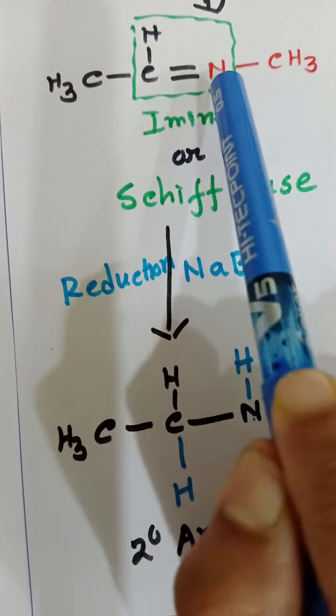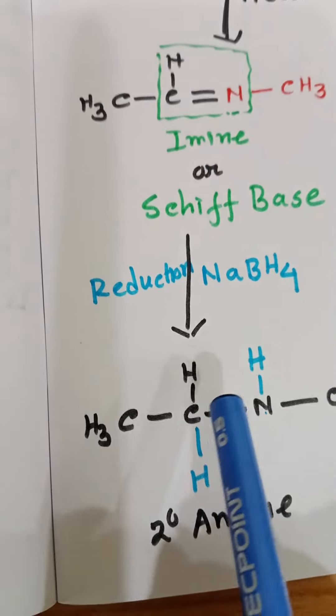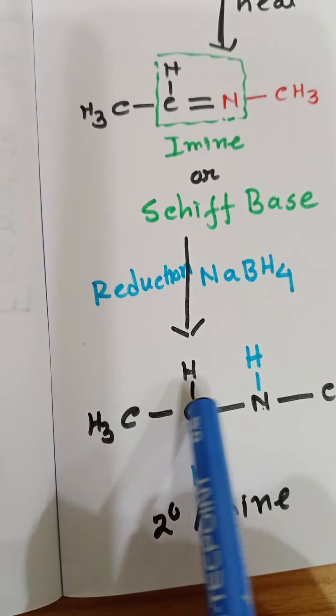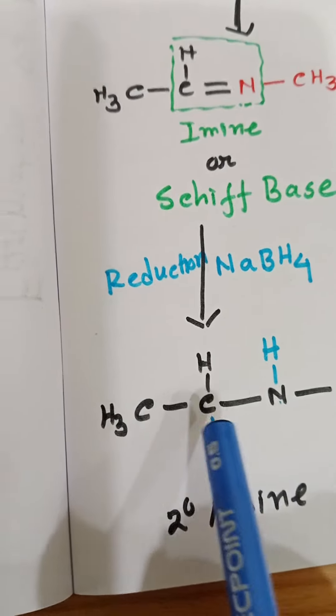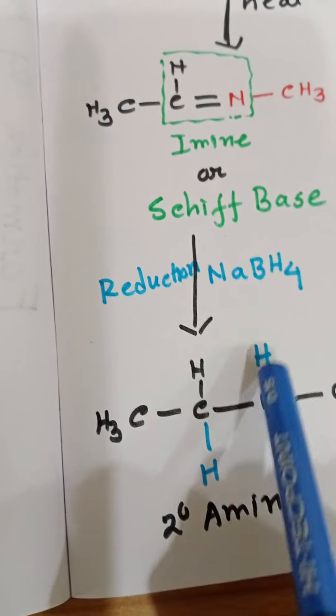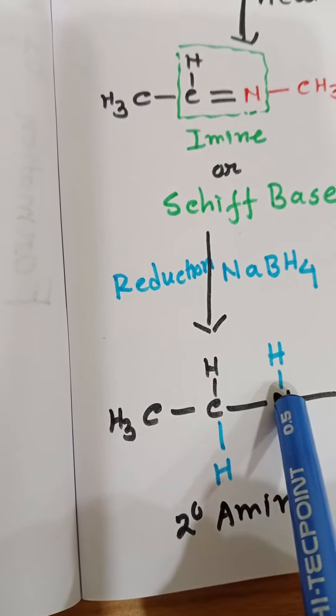Due to reduction, carbon double bond nitrogen will convert to carbon-nitrogen single bond. Now here you can see carbon and nitrogen valency is not fulfilled because now it becomes carbon-nitrogen single bond. That's why two hydrogen atoms will be adding across this carbon and nitrogen.